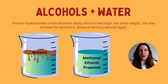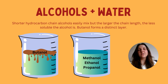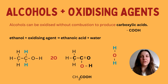The second reaction to know is alcohols reacting with water. You don't need a balanced symbol equation — you just need to know the observable changes. Shorter-chain alcohols such as methanol, ethanol and propanol easily mix with water. However, as you increase the chain length — getting to butanol and beyond — they become less soluble in water. Butanol forms a distinct layer on top of the water, linked to differences in density.